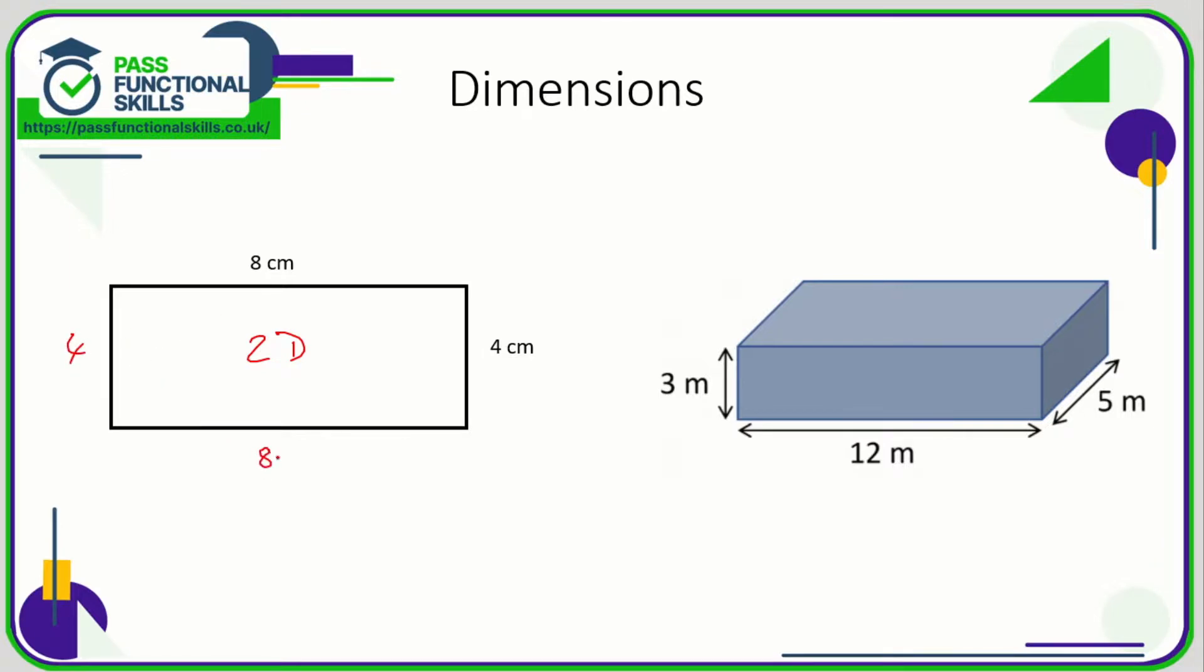On the right hand side we have a three-dimensional shape and this is a cuboid. Sometimes when 3D shapes are drawn you have these dotted lines just to give it more of a 3D feel.